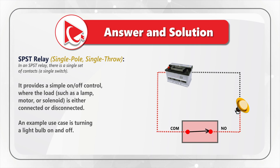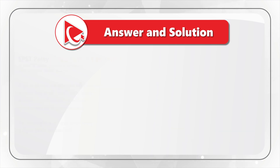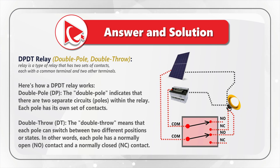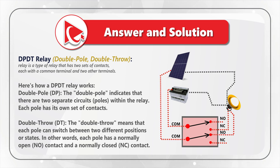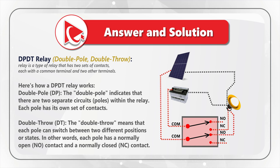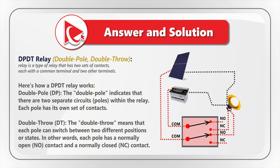A lot more complex relay is DPDT, which stands for double pole, double throw. This type of relay has two sets of contacts, each with a common terminal and two other terminals. DP stands for double pole — the double pole indicates that there are two separate circuits, or poles, within the relay, and each pole has its own set of contacts. Double throw, or DT, means that each pole can switch between two different positions or states. In other words, each pole has a normally open (NO) contact and a normally closed (NC) contact.